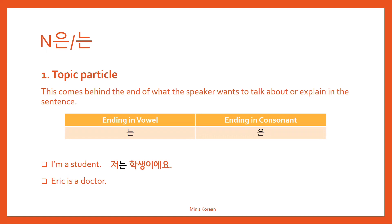And the second example: 'Eric is a doctor.' Eric is the topic of the sentence, so you use the topic particle 은 this time. Why? Because Eric ends in a consonant. So: 에릭은 의사예요.